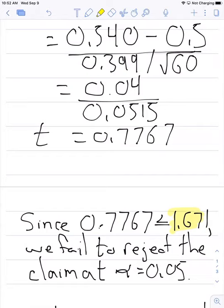And so we can say that since 0.7767 is less than 1.671, we fail to reject the claim at alpha of 0.05, or a level of significance at 0.05.